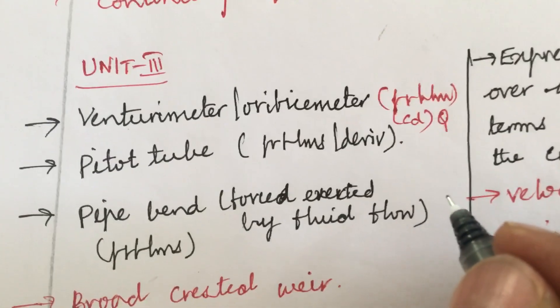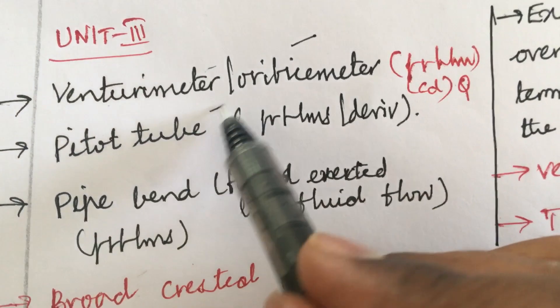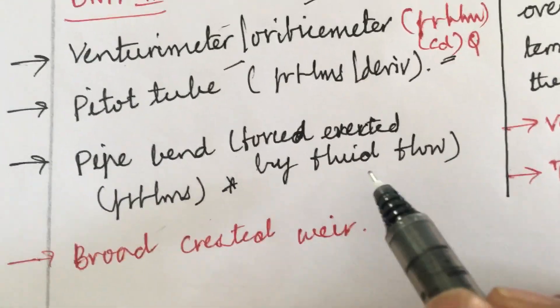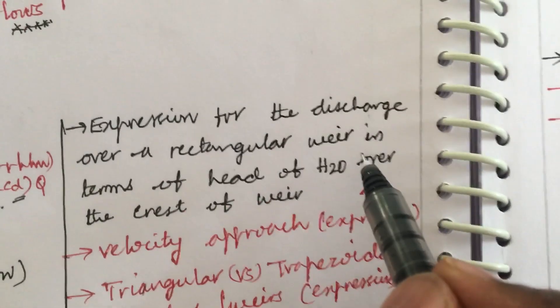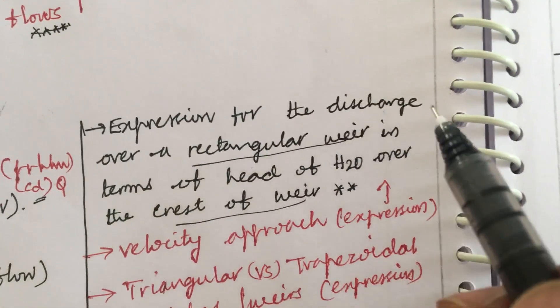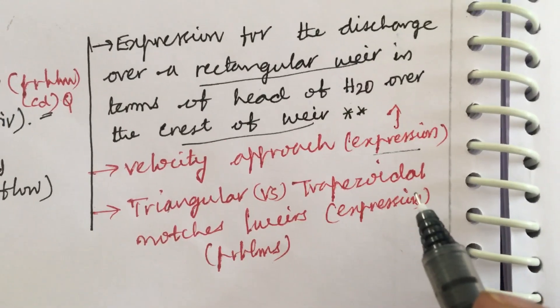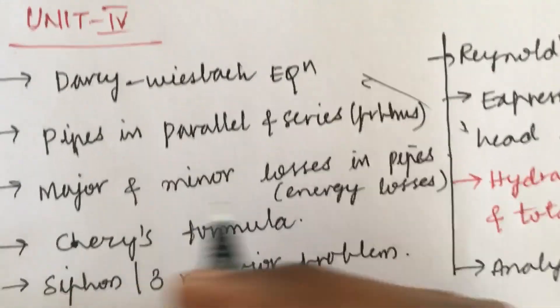Unit 3 is all about Bernoulli's applications. List out Bernoulli's applications — work out the venturimeter, orifice meter, and pitot tube, along with their derivations and problems. Work out the discharge of flow, pipe bend, and the force exerted by fluid flow — these are topmost questions. Broad-crested weir is a 2-mark question. The expression for discharge of a rectangular weir in terms of head of water over the crest is a gunshot question. Velocity of approach expressions, triangular versus trapezoidal notches, and their expressions and problems are also important. Long questions are 100% derivation and problem-based.